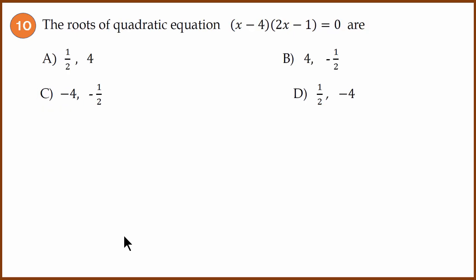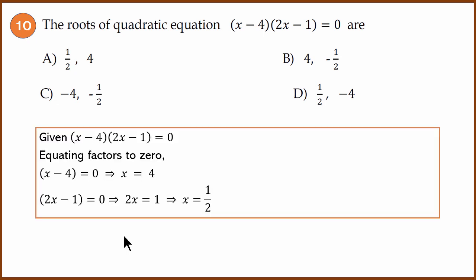Question 10: The roots of the quadratic equation. Factor form is given: (x - 4)(2x - 1) = 0. We have to equate the factors to 0. x - 4 = 0 means x = 4. 2x - 1 = 0 means 2x = 1 or x = 1/2. The answer is A: 1/2 and 4.